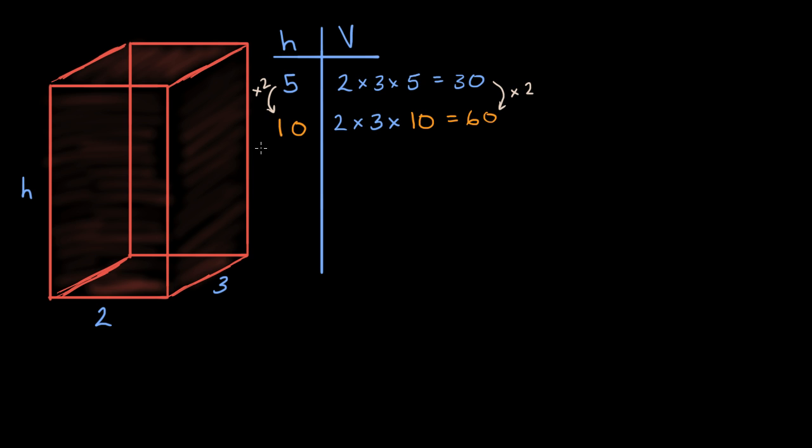Let's see if that holds up. Let's double it again. So what happens when our height is 20 units? Well, here, our volume is still gonna be two times three times 20, which is equal to six times 20, which is equal to 120.